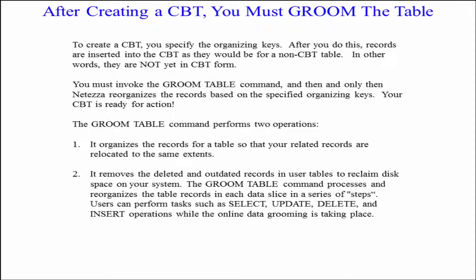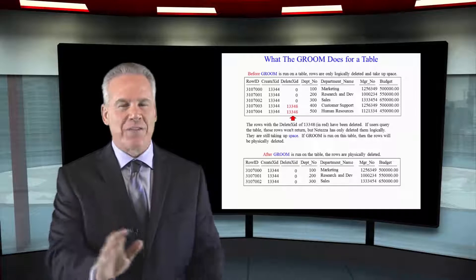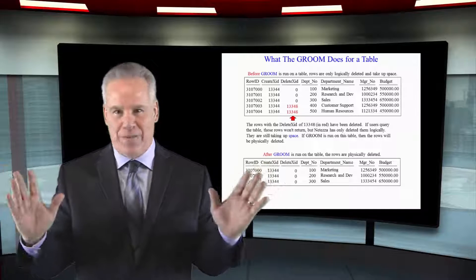Remember, the GROOM command does two things. First, it organizes the records for a table so that related records are relocated to the same extents — now the CBT is ready to roll. Second, it removes deleted and outdated records in user tables and reclaims that disk space. It runs in the background, so users can still do inserts, updates, deletes, and selects on the table without any interruption.